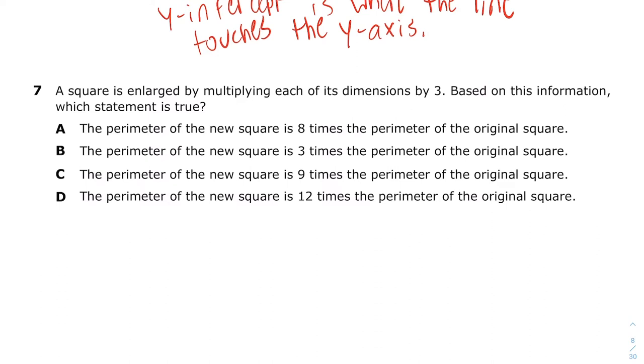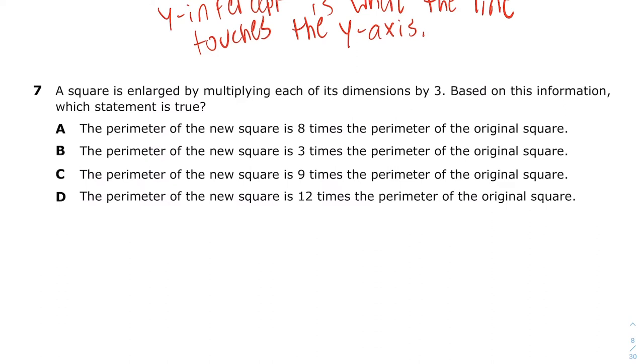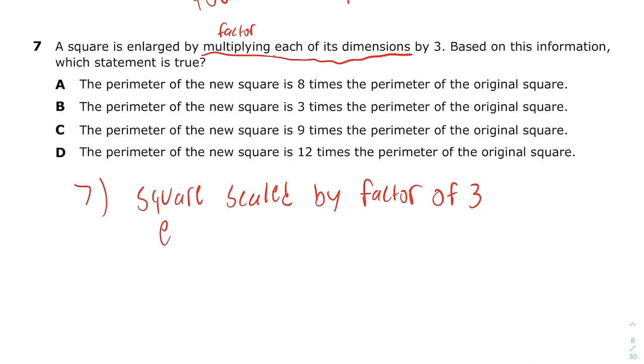Number seven. Remember, whatever I write down, you're also going to write down. So you don't have to write down all this question, you're just going to write down whatever tips I give you. We have a square scaled each of its dimensions by three. Scaled by, they said multiplying. And another word for multiplying is a factor. So it's scaled by a factor of three. If you're going to scale each of its sides by three, that means each side is three times longer.